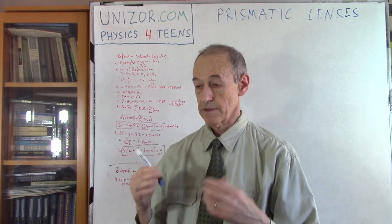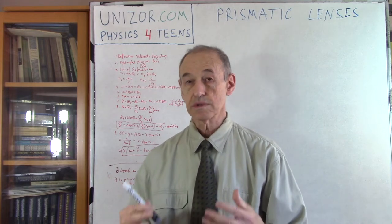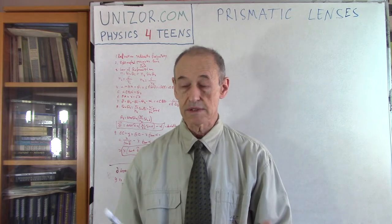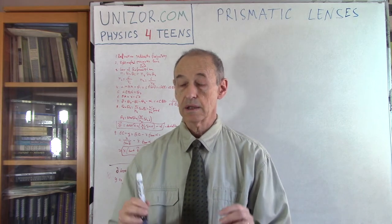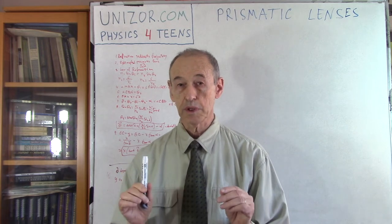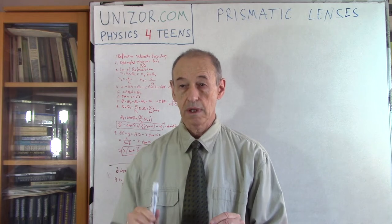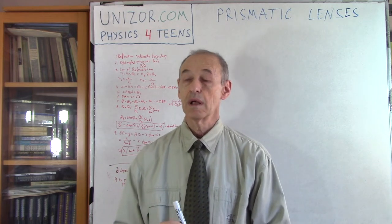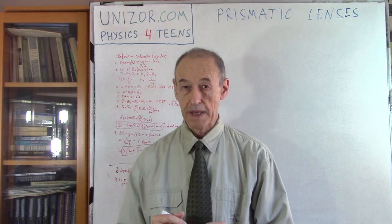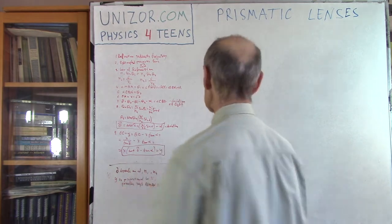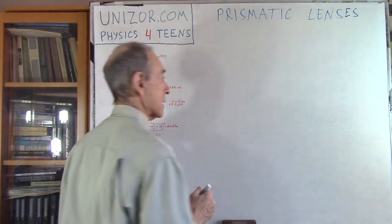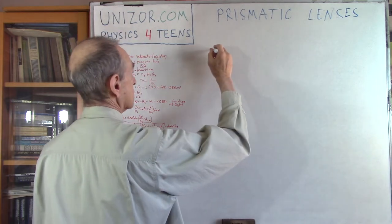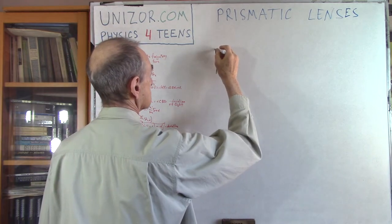This is used very extensively in lenses. Everybody knows what a lens is, and today I'll talk about one particular type of lens — probably the simplest one — a prismatic lens. So what is a prismatic lens? A triangular prismatic lens.